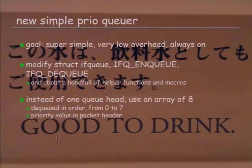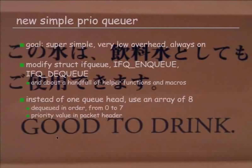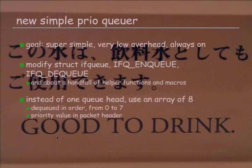So, starting to replace that. Priority queuing is the simpler of the two. The goal for the new priority queue is to be super simple, and the overhead should be so low that we can just enable it unconditionally and run all the time. That is actually the current status — that goal has been reached. How do we do this? We modify the struct IFQ, the NQ and DQ macros, and about a handful of helper functions, not more. It's very small and self-contained.